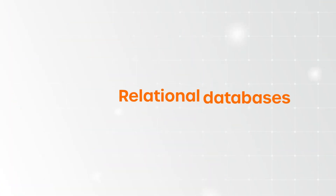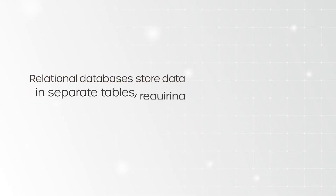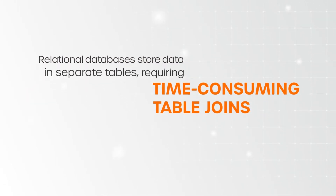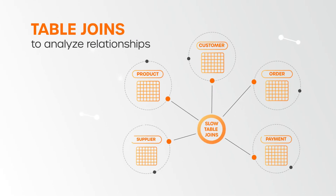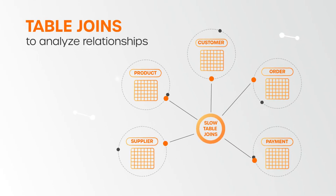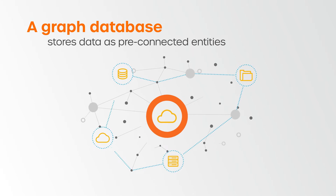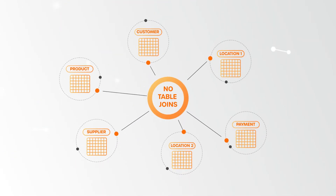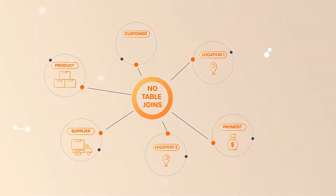Relational databases store data in separate tables, requiring time-consuming table joins to analyze relationships. TigerGraph's graph database stores data as pre-connected entities, so there's no need for table joins.